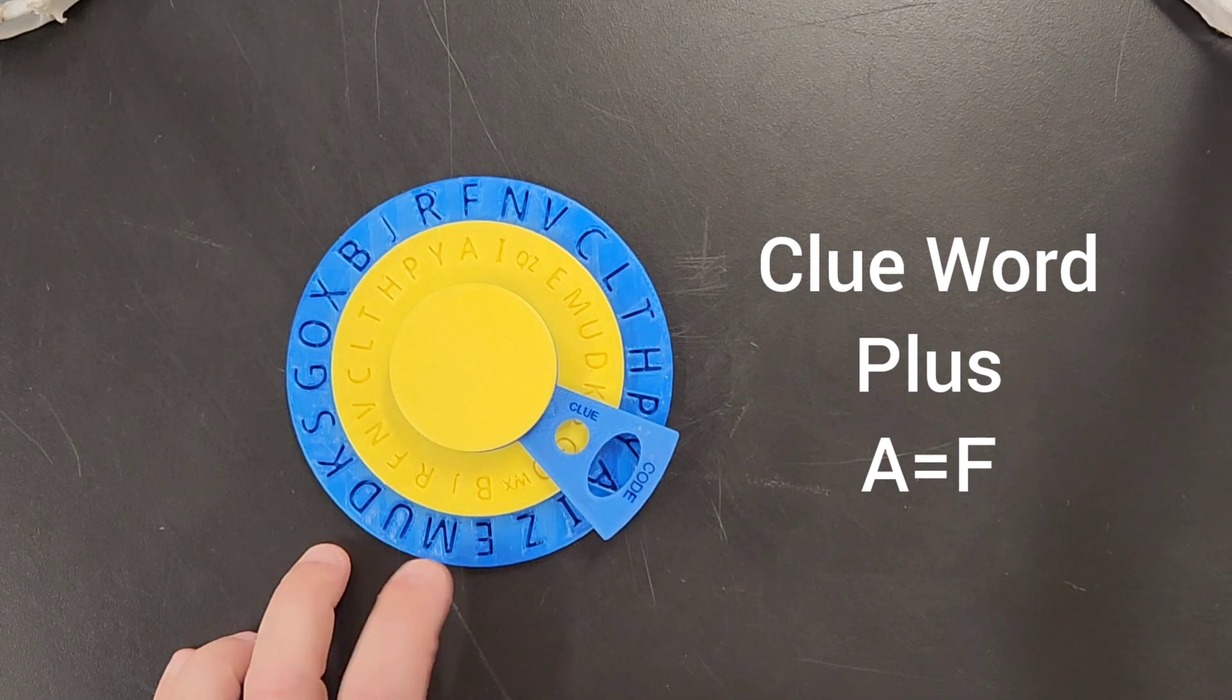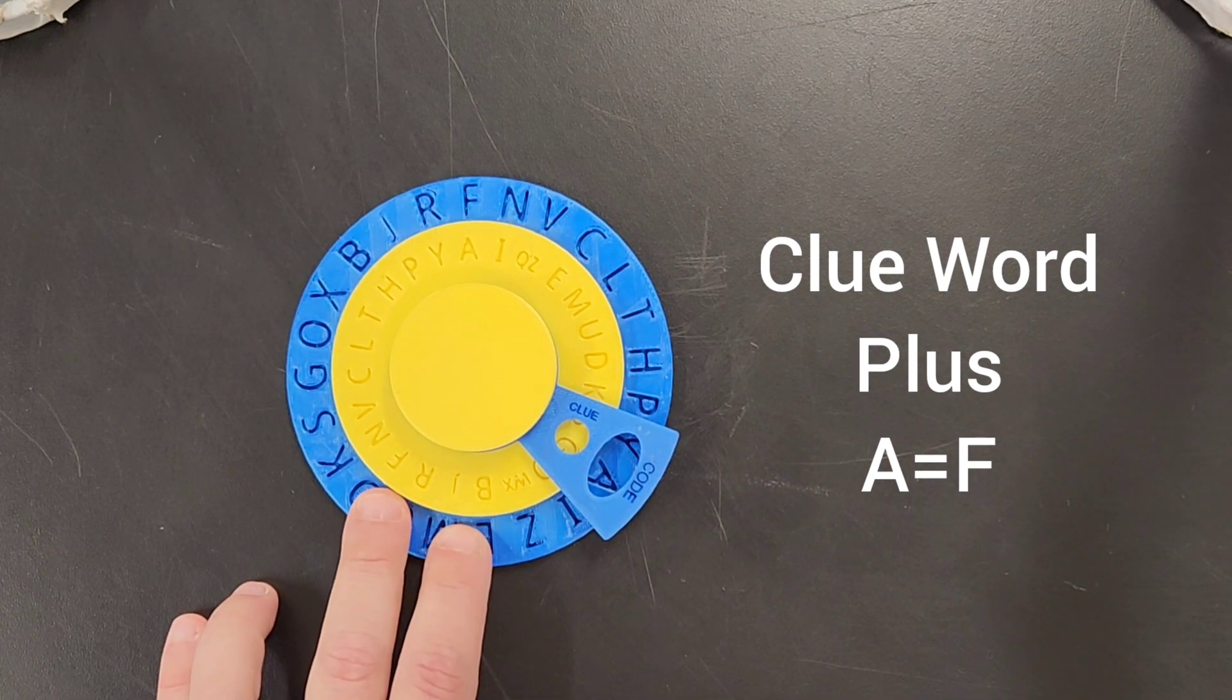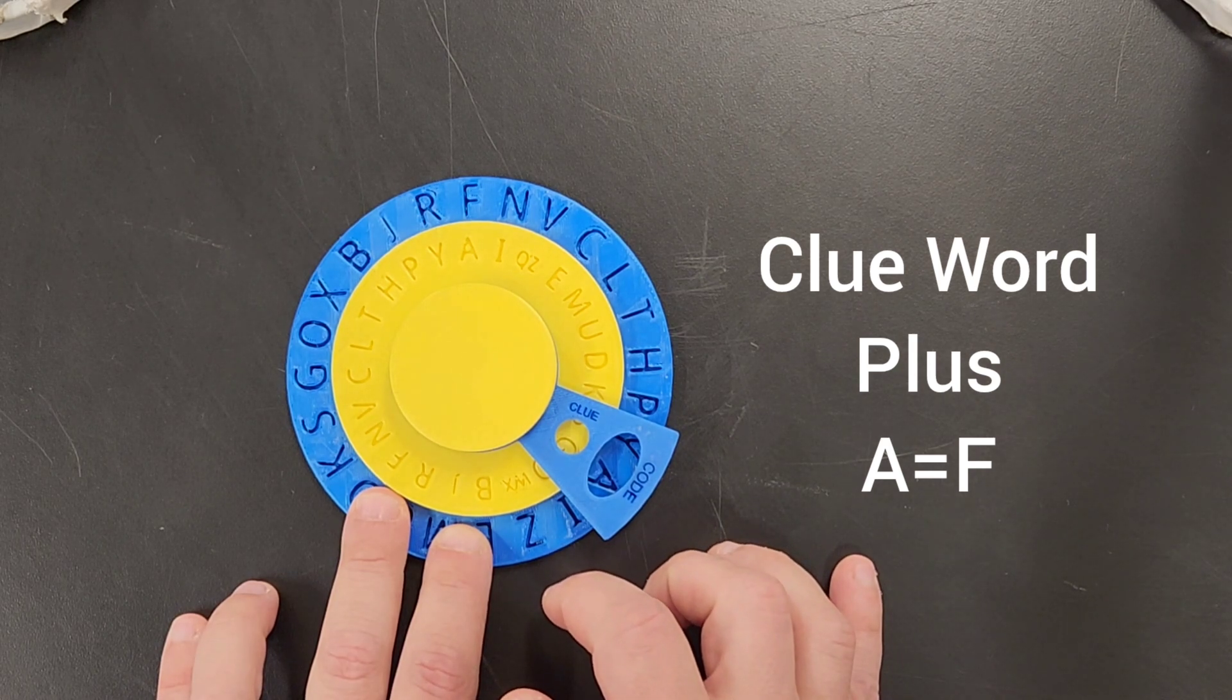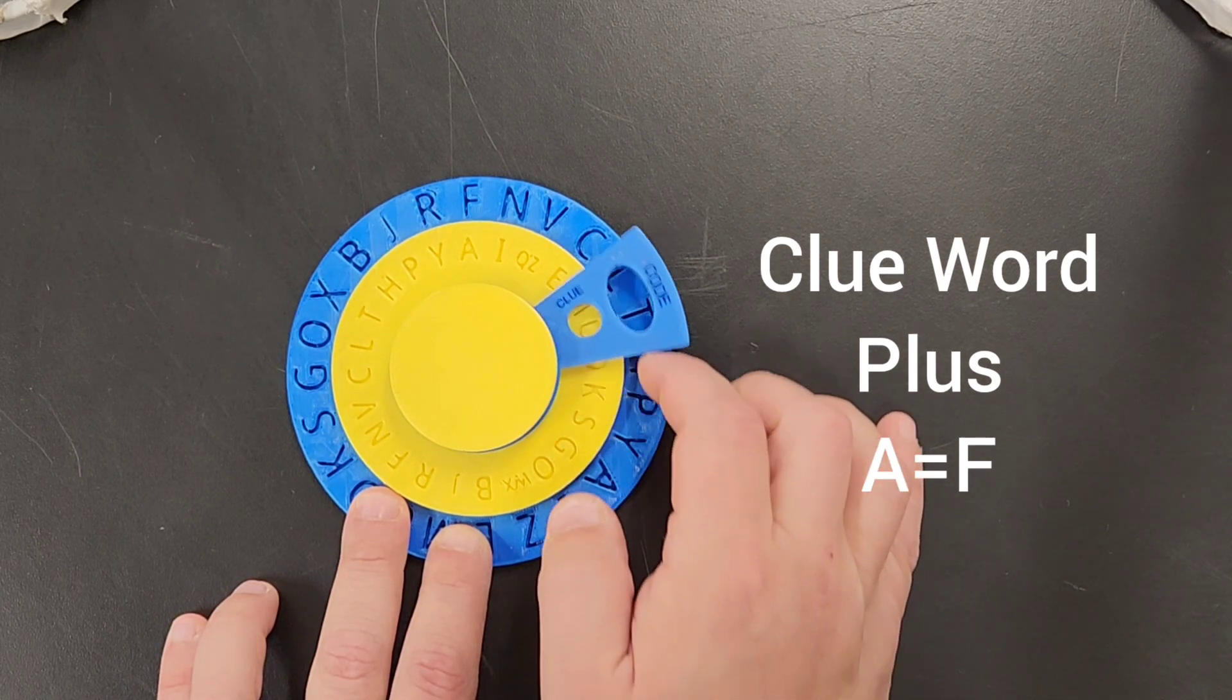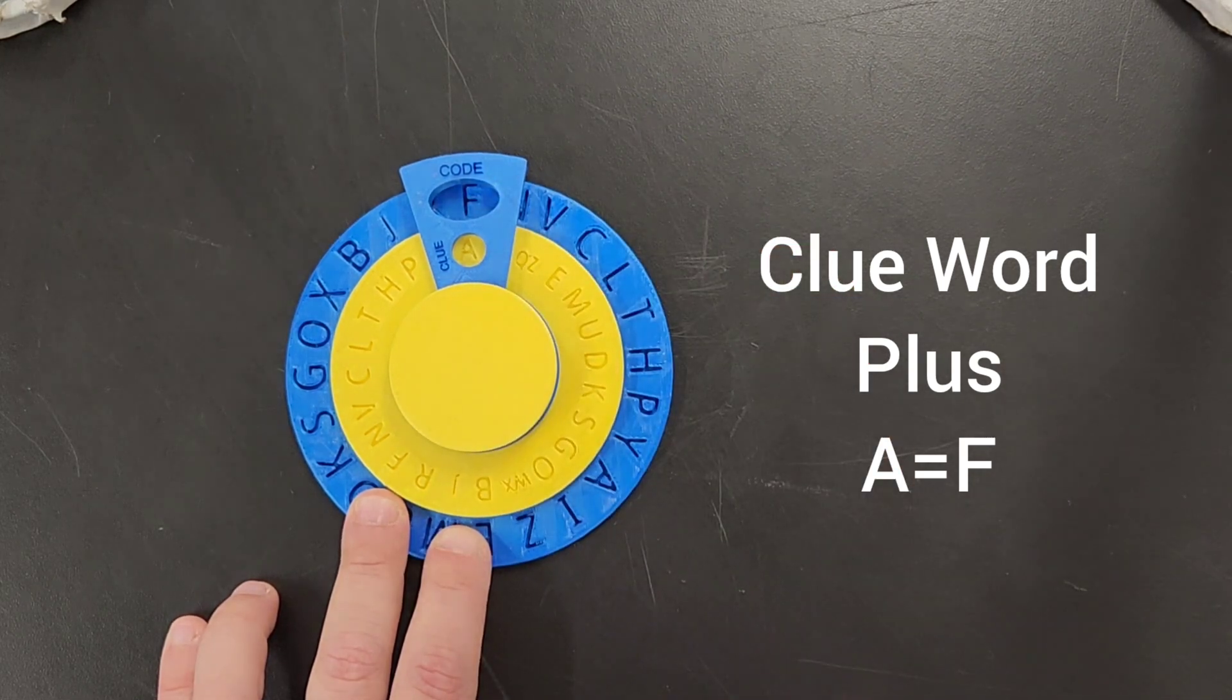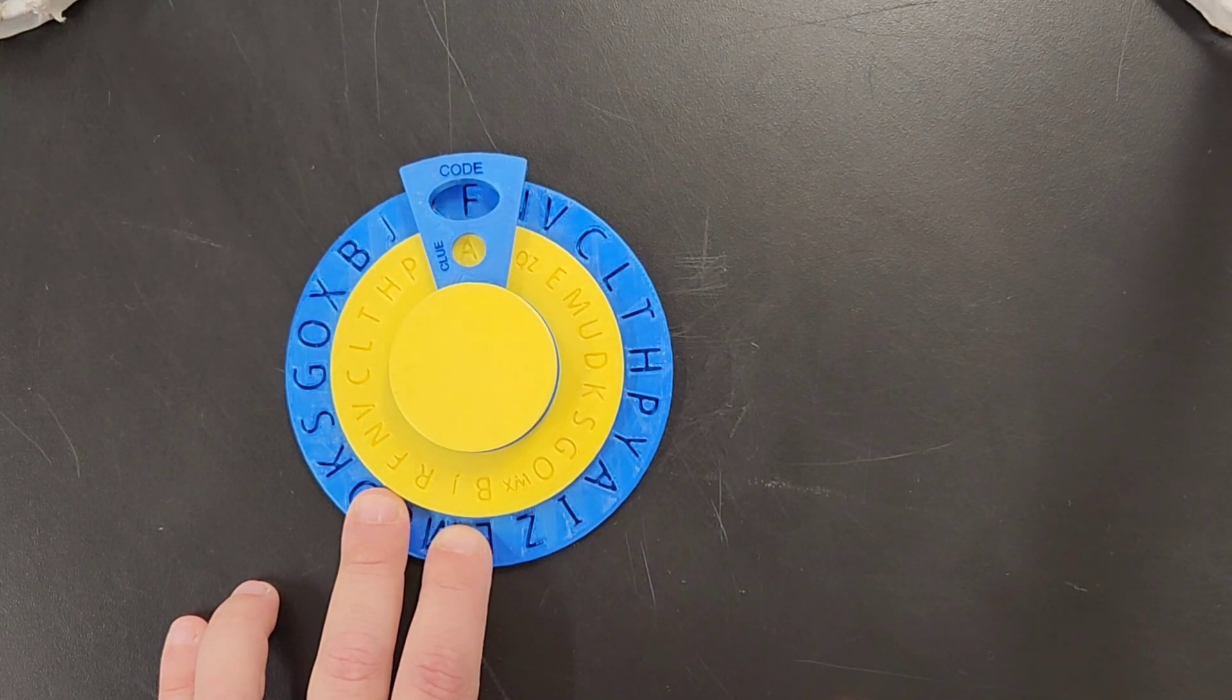So when I get a clue word, let's say it's alphabet, or maybe a better, easier one, apple. Okay, A equals F. Can you see that? Looks good.